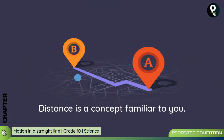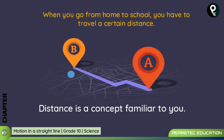Distance is a concept familiar to you. You travel every day from one place to another, and you say things like 'I traveled 5 kilometers,' '25 kilometers,' or '250 kilometers.' For example, when you go from Kandy to Colombo, the milepost indicates it is around 113 kilometers — that is a distance. Similarly, when you go from home to school, you travel a certain distance.